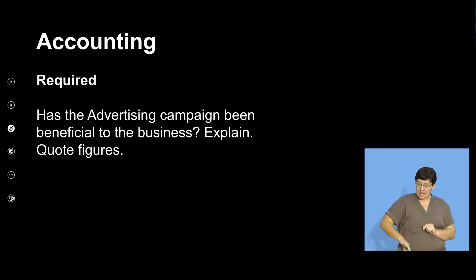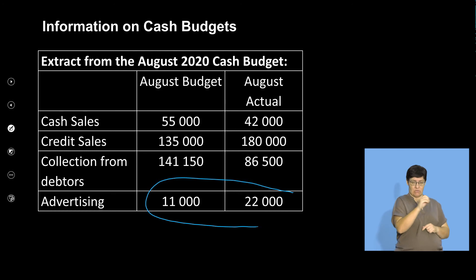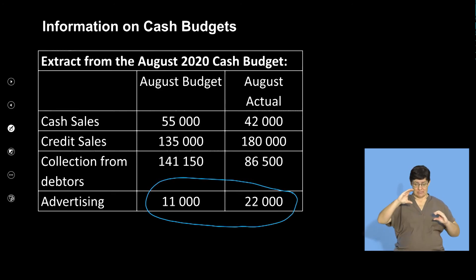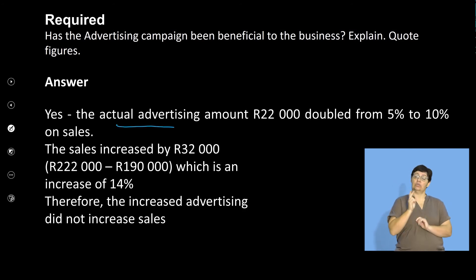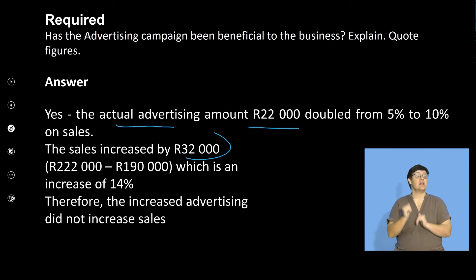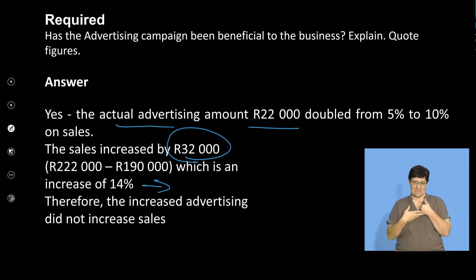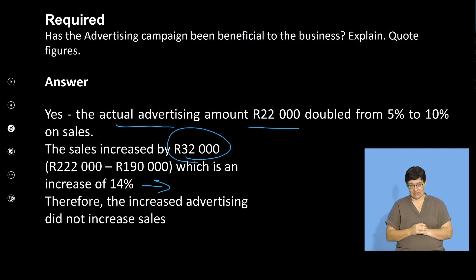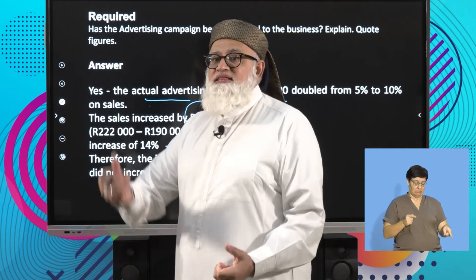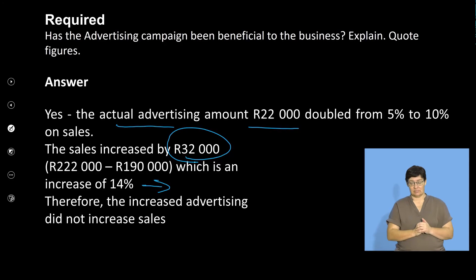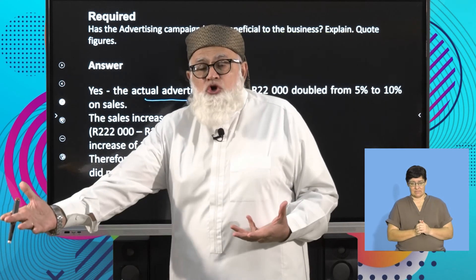Has the advertising campaign been beneficial? We budgeted 11,000 but spent 22,000 — the actual advertising doubled. Sales increased by 32,000, which is an increase of 14%. The increased advertising had a mixed impact: credit sales increased but cash sales decreased. So it had two different impacts when looking at cash sales versus credit sales.